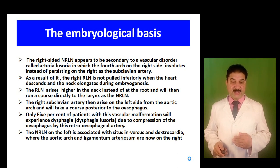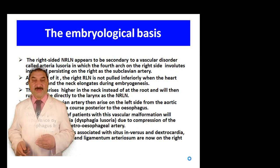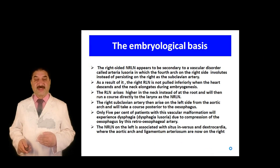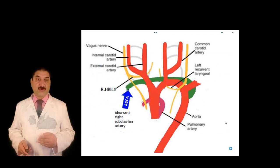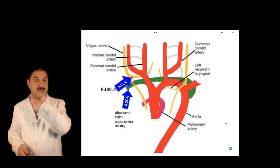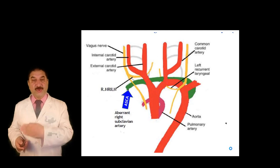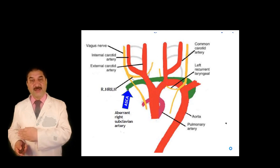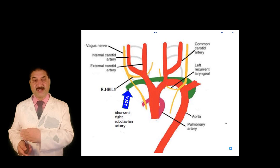The non-recurrent laryngeal nerve on the left side is associated with situs inversus and dextrocardia, where the aortic arch and ligamentum arteriosum are on the right side. As shown in this diagram, the aberrant right subclavian artery originates from the arch of the aorta on the left side. When there is absence of the normal subclavian artery on the right side, there is no hooking of the recurrent laryngeal nerve during descent of the heart, leading to the cervical origin of the recurrent laryngeal nerve — what we call the non-recurrent laryngeal nerve.